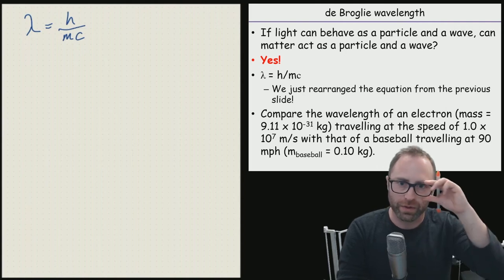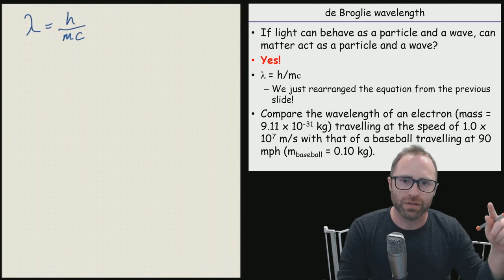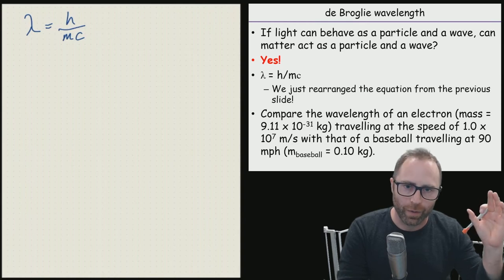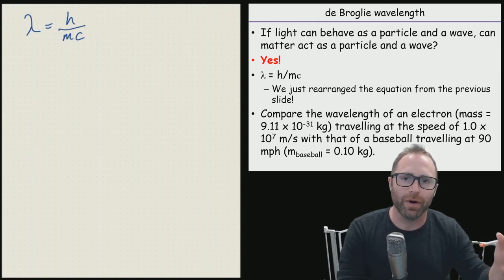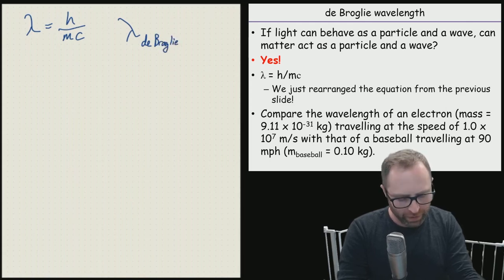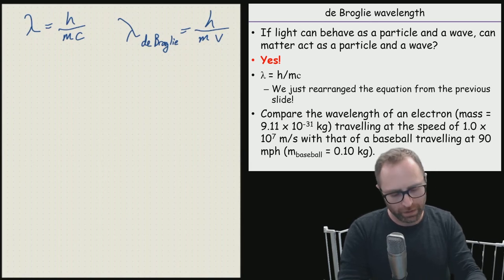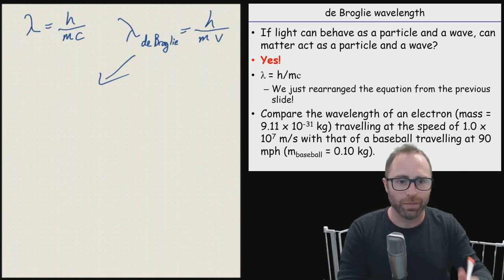We have the equation, the lambda equals h over mc. So, normally we think of with this, that c is the speed of light. In this particular situation for the de Broglie wavelength, we are going to focus on c being our velocity of our particle. So, sometimes you'll see this written out for the de Broglie wavelength as h over mv, not ν, not frequency, but v velocity, speed. Okay, so since we have that, it's time to plug and chug.